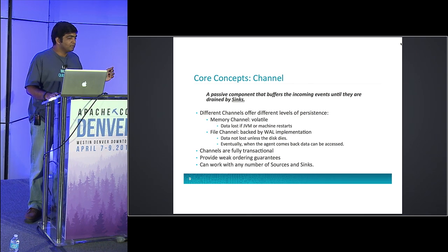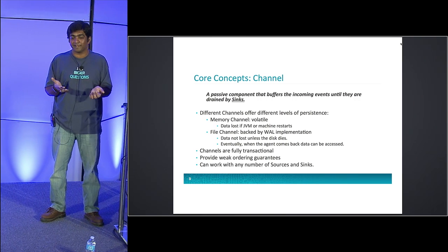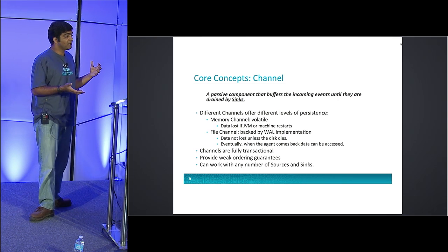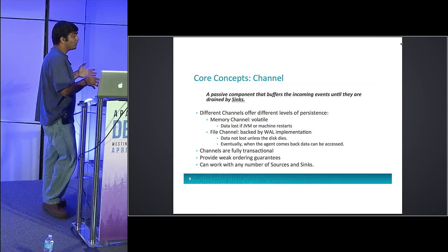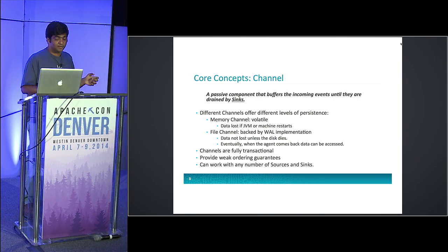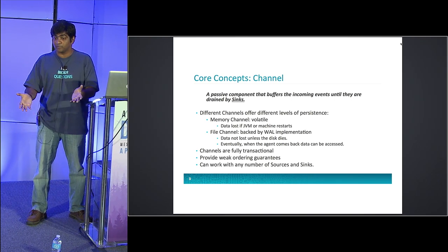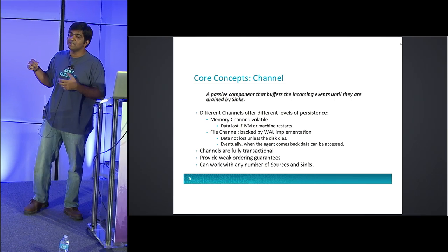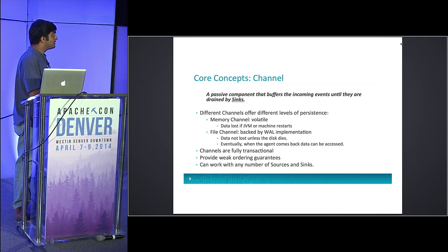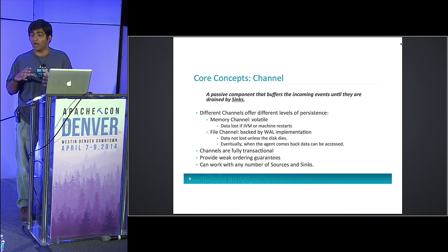There is a caveat though: the file channel writes to disk. If your disk dies, the data is lost, because the file channel does not support mirroring by itself. If you want to make sure data is not lost if a disk dies, you probably want to RAID it or use some other mechanism to replicate your disk. If your agent goes down and comes back up, the data in the file channel is available again — maximum you would see is a delay, not a data loss itself.